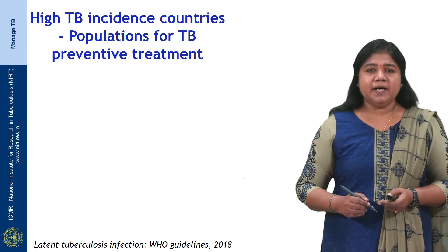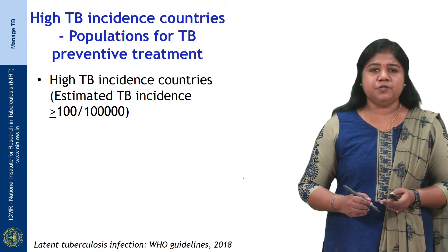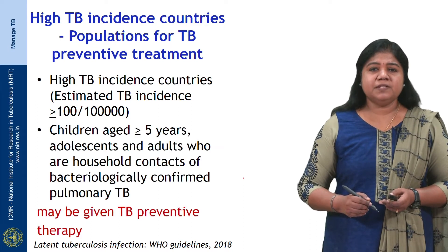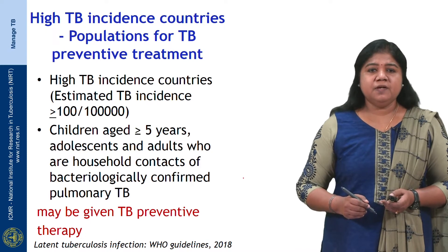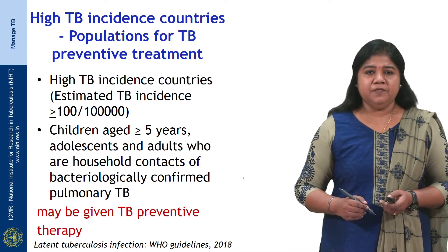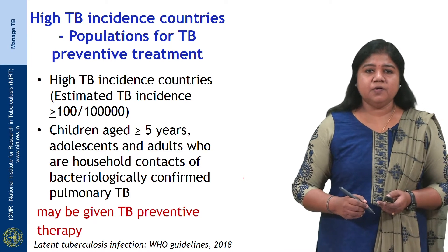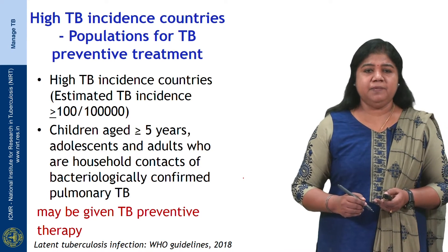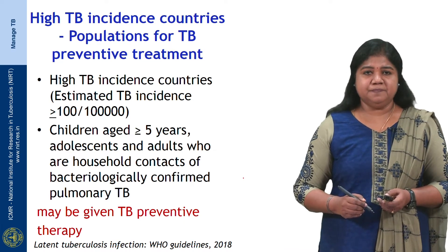In high TB incidence countries, where the estimated TB incidence is more than or equal to 100 per lakh population, the populations for TB preventive treatment include children aged more than or equal to 5 years, adolescents, and adults who are household contacts of bacteriologically confirmed pulmonary TB patients. They may be given TB preventive therapy.